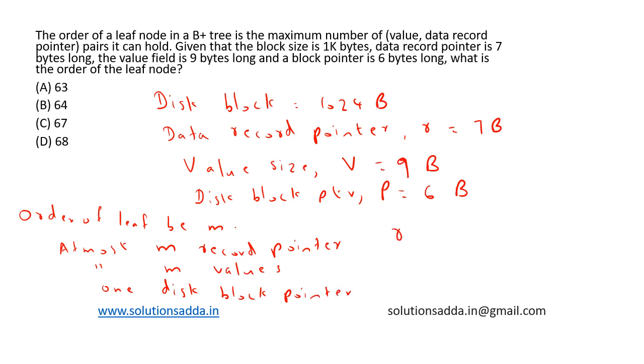Based on this, we can say that R times m plus V times m plus P will be less than or equal to the disk block size, that is 1024. Rewriting, 16m is less than or equal to 1018.